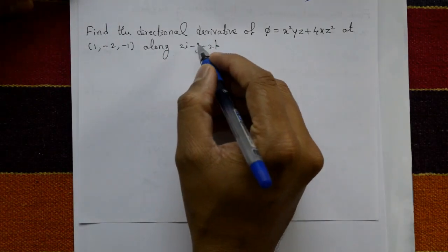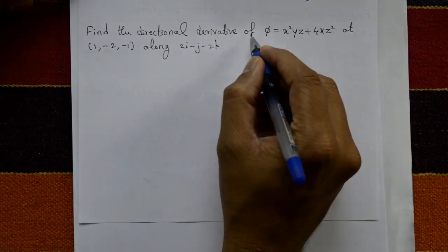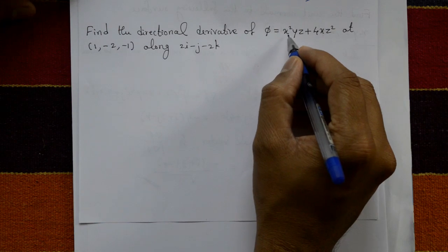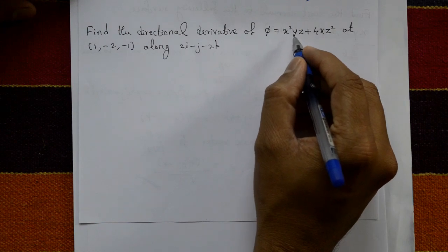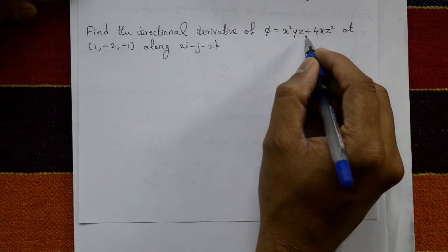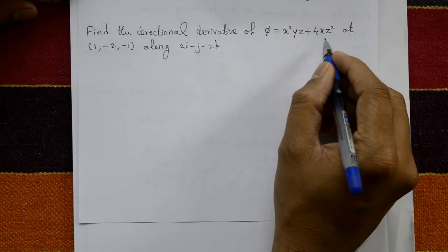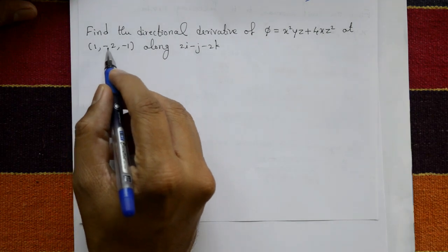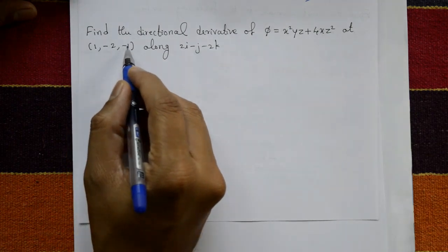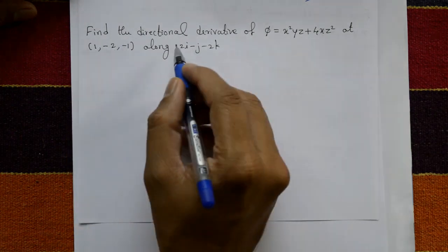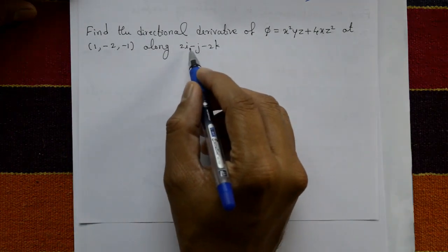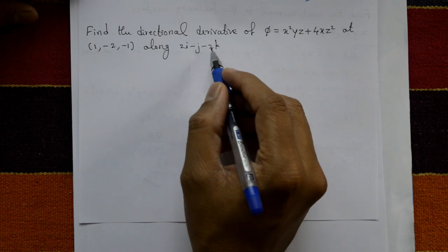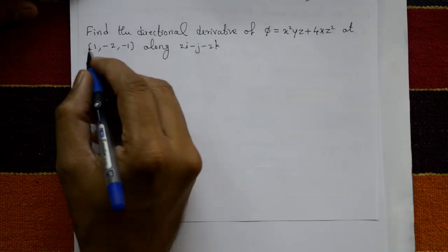Find the directional derivative of phi equal to x squared y z plus 4x z squared at the point (1, -2, -1) along the direction 2i minus j minus 2k.